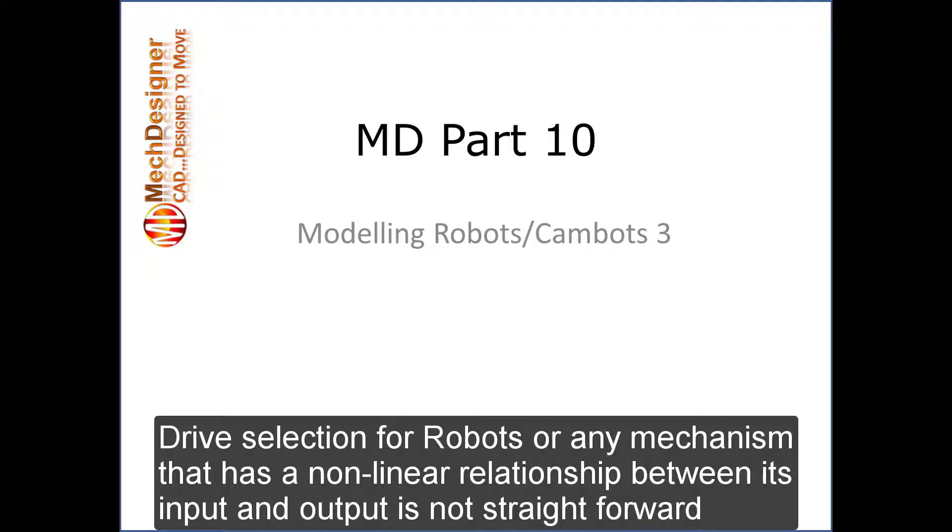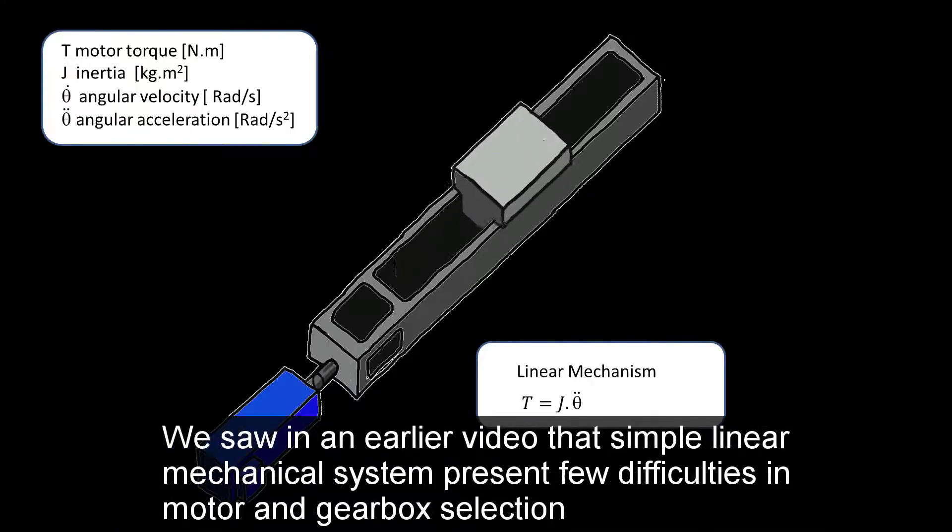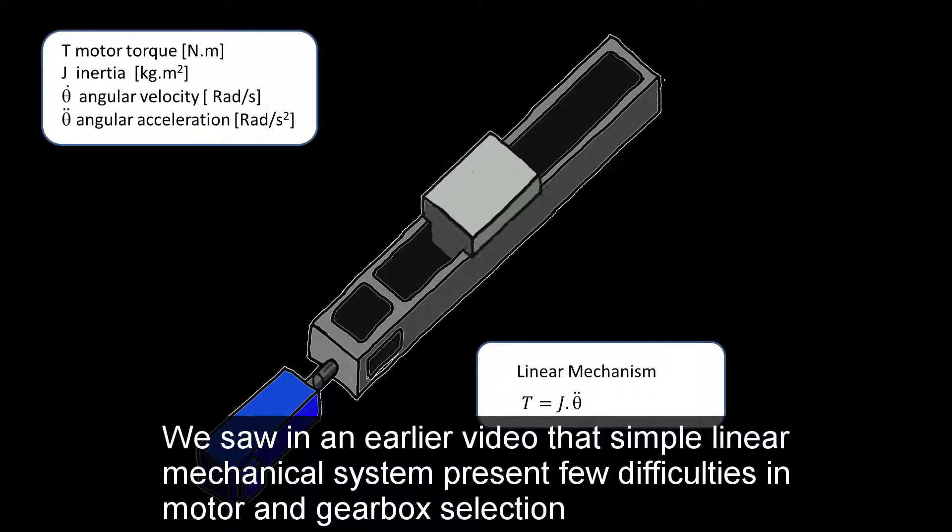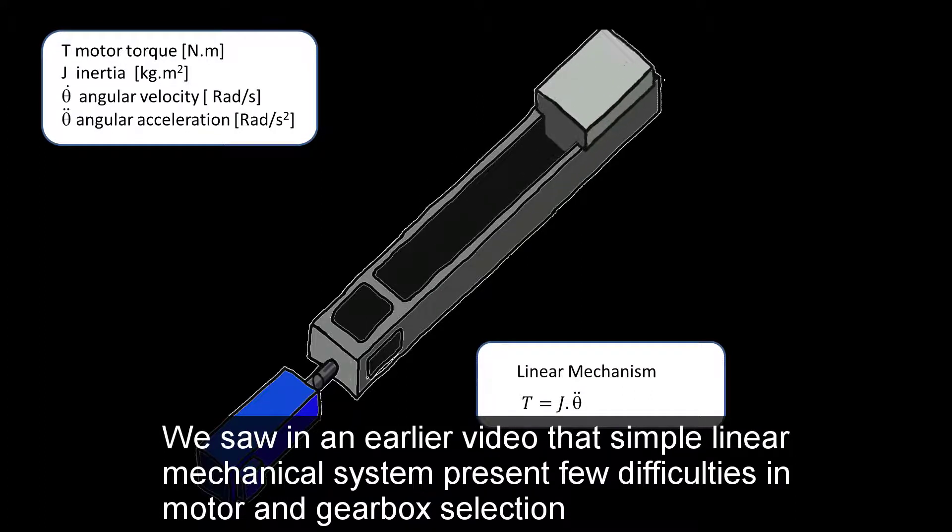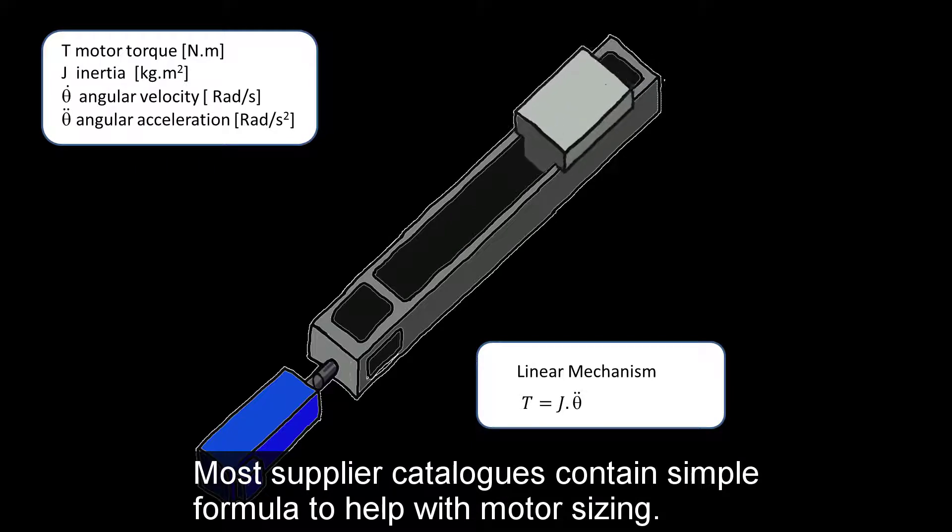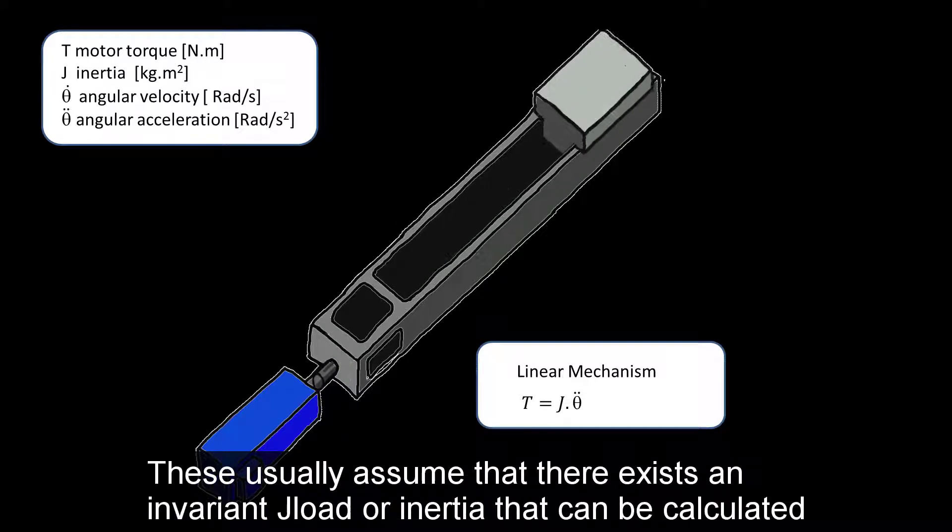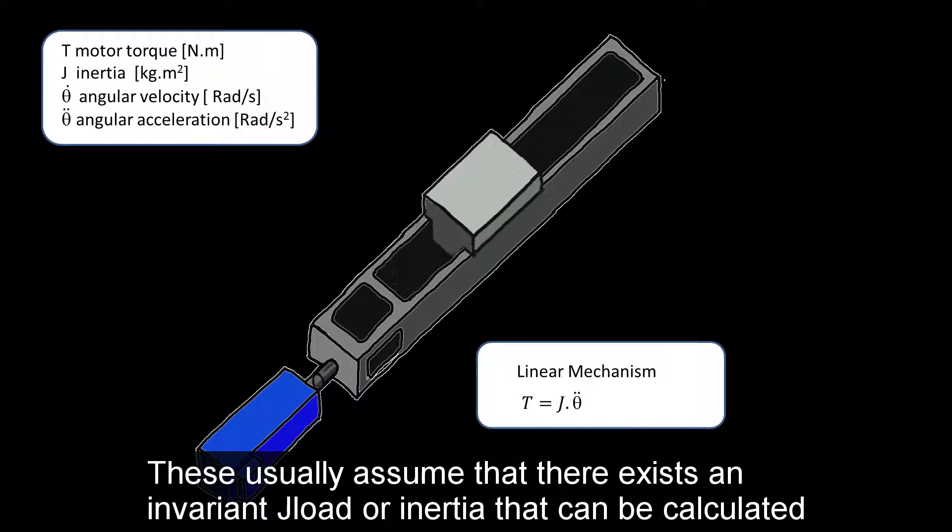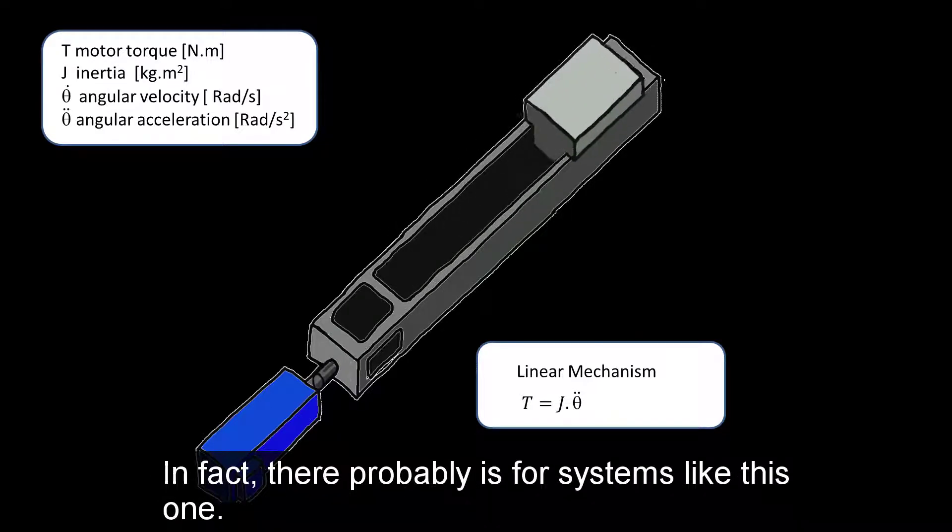Drive selection for robots or any mechanism that has a non-linear relationship between its input and output is not straightforward. We saw in an earlier video that simple linear mechanical systems present few difficulties in motor and gearbox selection. Most supplier catalogues contain simple formulas to help with motor sizing. These usually assume that there exists an invariant J-load or inertia that can be calculated. In fact, there probably is for systems like this one.